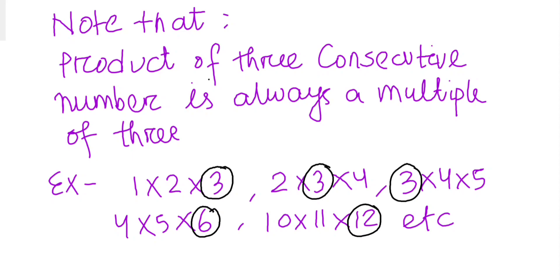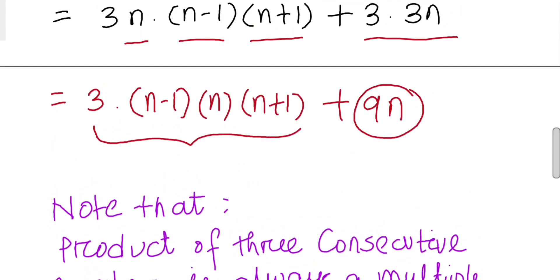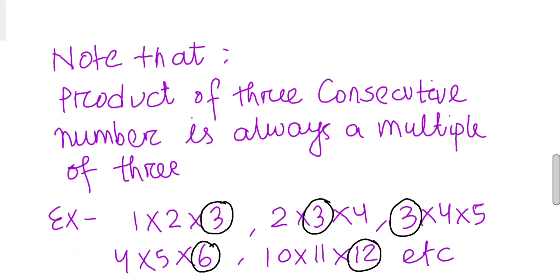How? So you see here, we have 3 into (n-1) into n into (n+1) plus 9n. And as I told you, this is (n-1), n, and n+1, which is a product of 3 consecutive numbers.